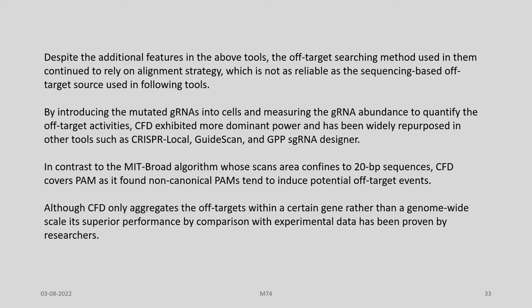By introducing mutated gRNAs into cells and measuring gRNA abundance to quantify off-target activities, CFD exhibited more dominant power and has been widely repurposed in other tools such as CRISPR local guide scan and GPP sgRNA designer. In contrast to the MIT broad algorithm, whose scan area is confined to 20 base pair sequences, CFD covers PAM as it found non-canonical PAMs tend to induce potential off-target events. Although CFD only aggregates off-targets within a certain gene rather than at a genome-wide scale, its superior performance by comparison with experimental data has been proven by researchers.